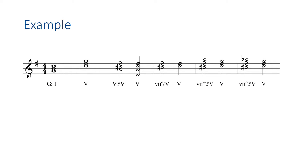Here's an example of all the different types of secondary dominants and leading tone chords we've discussed. We're in the key of G major, so my tonic is G. My dominant, which I'm tonicizing, is five — D, F-sharp, A. In the key of D, my five-seven is an A seven chord, which resolves to the five. Now here's a seven diminished of five. You'll notice the two chords are very much related — if you take a five-seven of five and remove the root, you get the seven diminished of five.